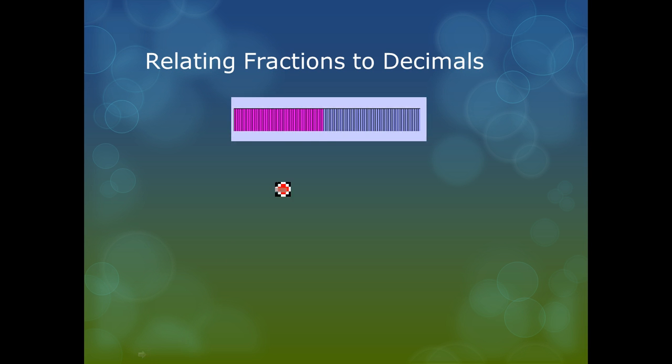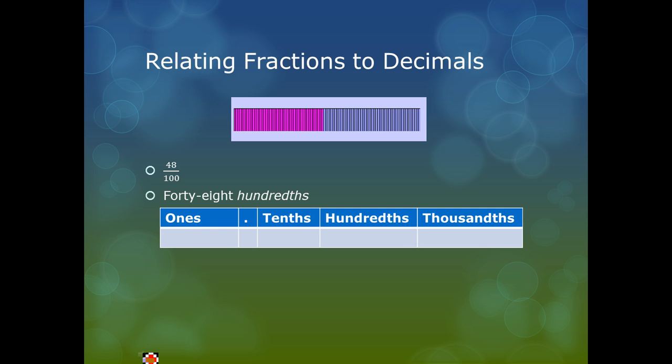Another example is 48 hundredths. It's a little bit hard to see, but this is 48 hundredths. I write that as a fraction as 48/100. I say this fraction as 48 hundredths. And I write this in decimal form as 0.48. And that's 48 hundredths.